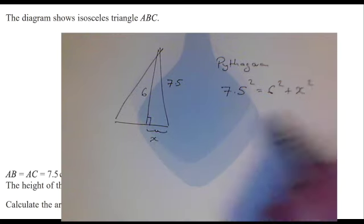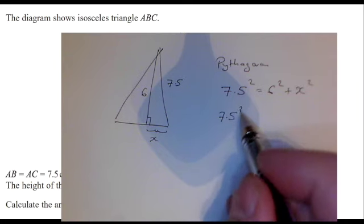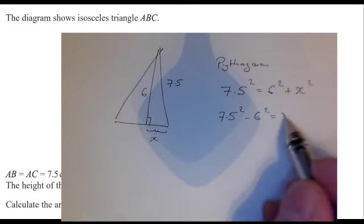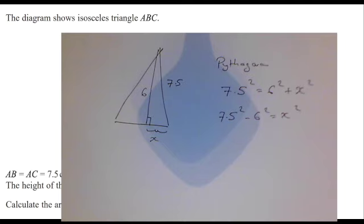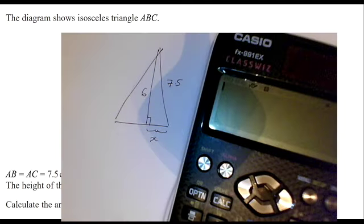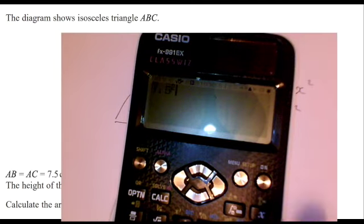So I'll need to do 7.5 squared take away 6 squared, and that's going to equal that little x squared. And don't forget to square root your answer when you've done that.